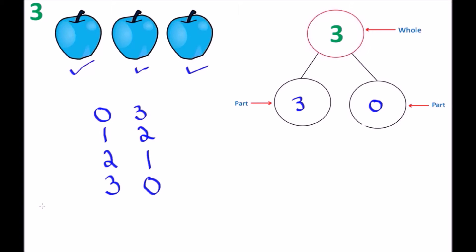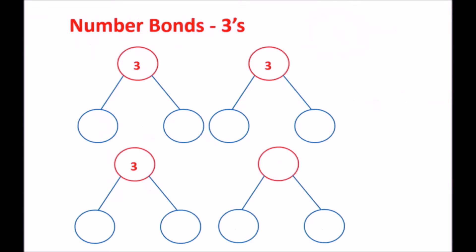What we're going to do now is see what they look like again as actual number bonds instead of just looking at the apples. So we have four number bonds to fill out. We have a zero and a three, then we have a one and a two. Then the next number bond, we have a two and a one. And our last one is a three and a zero.